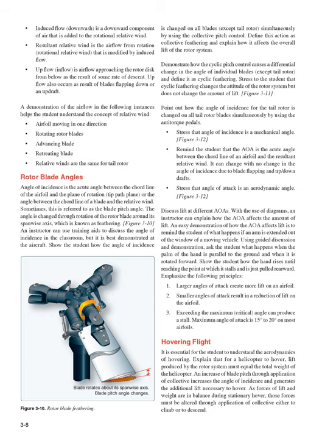Remind the student that angle of attack (AOA) is the acute angle between the chord line of an airfoil and the resultant relative wind. It can change with no change in the angle of incidence due to blade flapping and up/downdrafts — stress that angle of attack is an aerodynamic angle. Discuss lift at different AOAs. An easy demonstration of how AOA affects lift is to remind the student of what happens when an arm is extended out the window of a moving vehicle — ask what happens when the palm is parallel to the ground and when it is rotated forward. Show the student how the hand rises until reaching the point at which it stalls and is just pulled rearward.